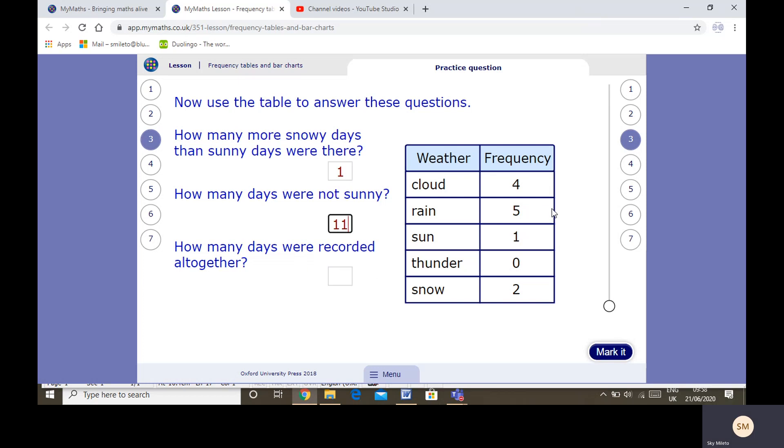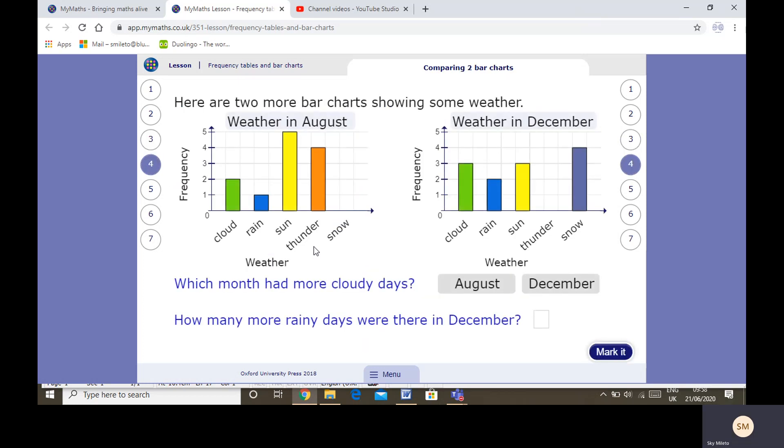How many days were recorded all together? So we recorded 12. Now it may say 13 because of the 0, I don't think it will. Brilliant. Well done if you got that. So have a go at these questions and I'll go through the answers.